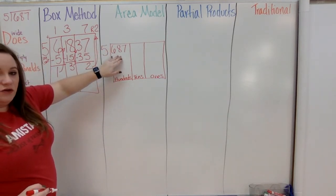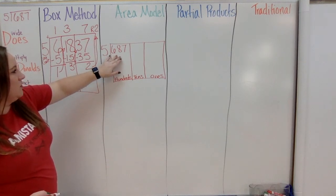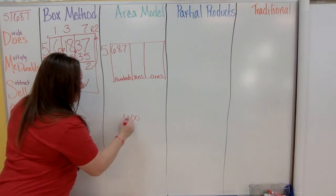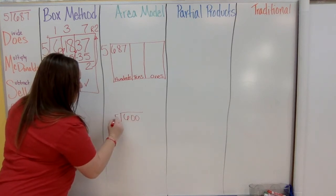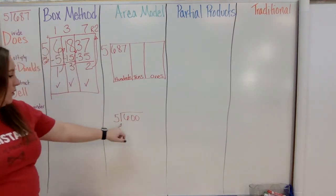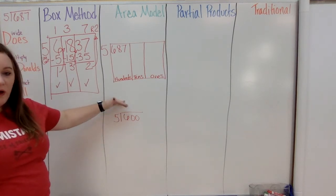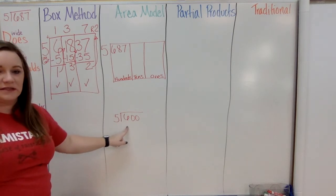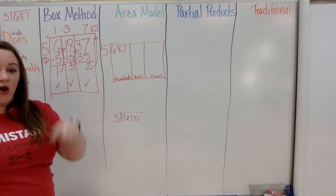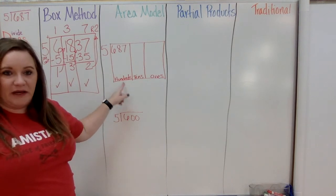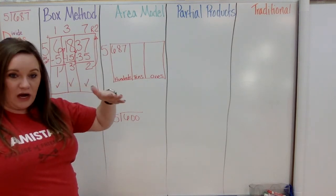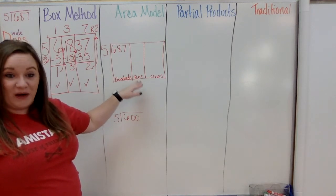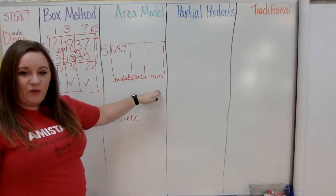This model wants you to imagine: if you had 600 divided by 5, how close can you get? Starting with 100, then 200, then 300, and so on — as close to 600 without going over. Because we're in the hundreds place we start with 100. When we move to the tens place we'll start with 10s, 20s, 30s, etc.